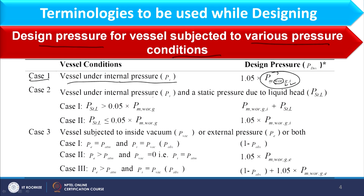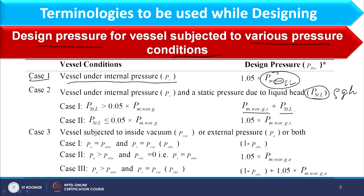Case 2 is a vessel under internal pressure PI and a static pressure due to liquid head P_ST, which is rho×g×h. If the static head is greater than 5% of the maximum working gauge pressure, the design pressure is maximum working gauge internal plus P_STL. If the static head is less than 5%, then design pressure is 5% extra over the maximum working gauge internal pressure.